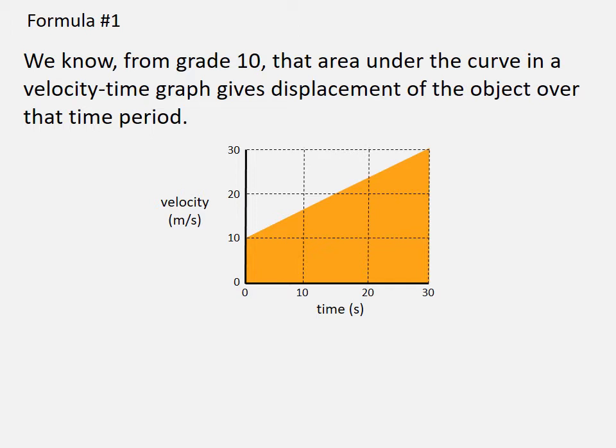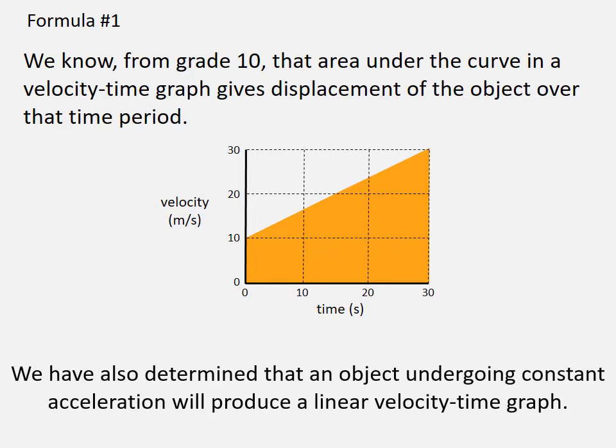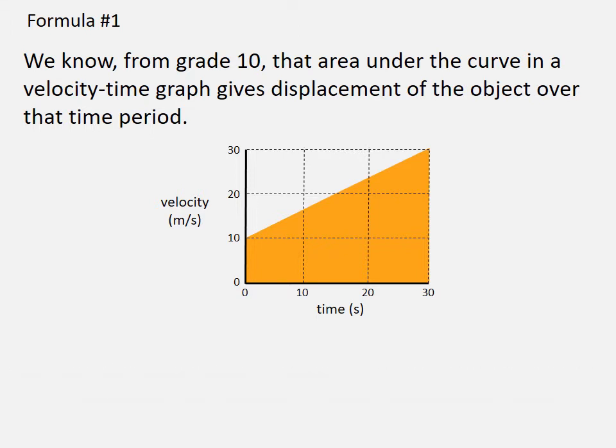We know from grade 10 that the area under the curve in a velocity-time graph gives the displacement of the object over that time period. We have also determined that an object undergoing constant acceleration will produce a linear velocity-time graph. Here we have a velocity-time graph with constant acceleration, and the object has gone from 10 meters per second to 30 meters per second over a 30-second time period. We are going to calculate the area under this graph to find the displacement.